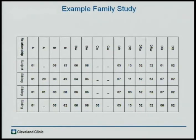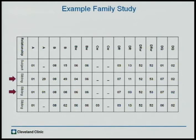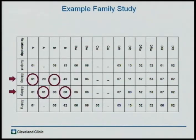Every person has two haplotypes. Using a family study, we compare the subject with siblings to try and determine which components travel together. For example, in this one, we're going to look at these two siblings because the first sibling has an A01 and an A29, and the other one has an A01 and an A01. From that, we can determine, potentially, this A01 traveled together. Then, going on to the B location, we see that potentially the eight traveled together. As we go along, we can start developing certain ideas of which chunks came together.